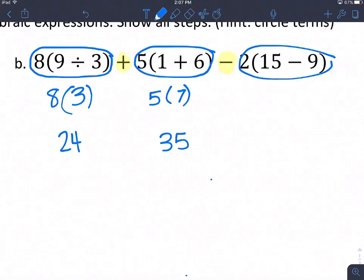And then my last term, I have 15 minus 9, which is 6. So this becomes 2 times 6, which is 12.